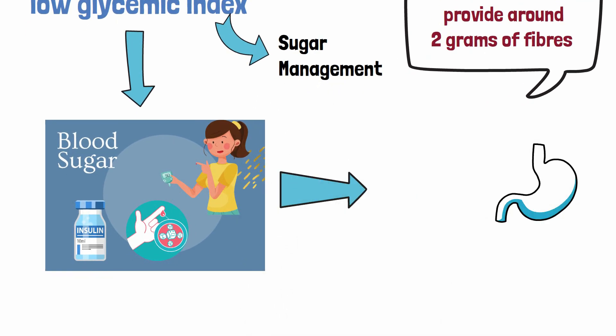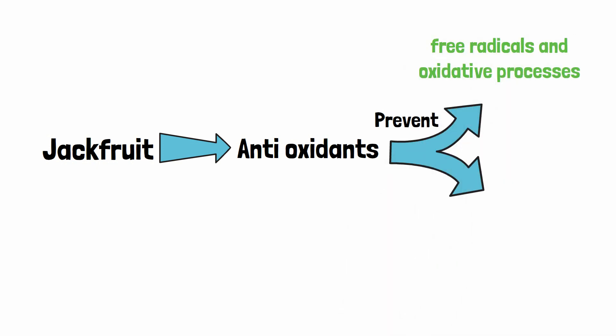Also, fiber present in jackfruit helps digestion and reduces risks for heart diseases. Another very important thing about jackfruit nutrition is it has many powerful and effective antioxidants. Antioxidants prevent diseases caused by free radicals and oxidative processes and reduce risks from many chronic diseases.